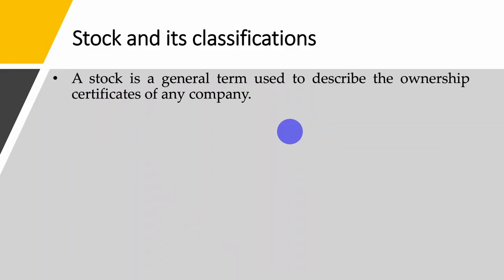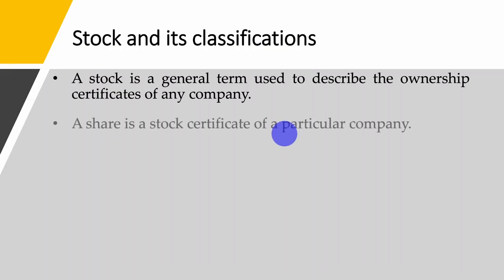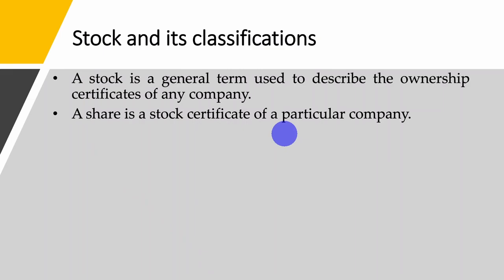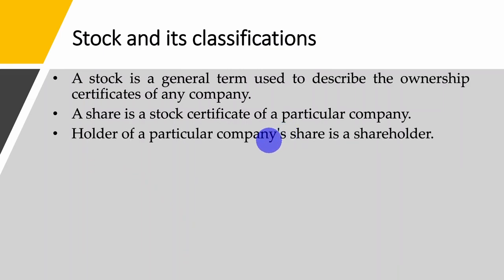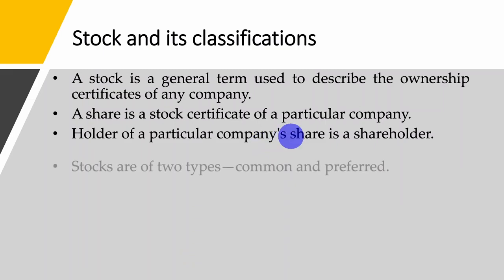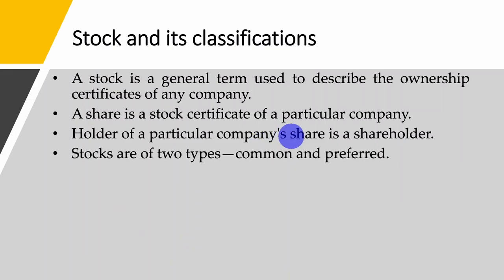A stock is a general term used to describe the ownership certificate of any company, while a share is a stock certificate of a particular company. A holder of a particular company's shares is normally called a shareholder. We have two types of stock or shares: common stock or ordinary shares, and preference shares or preferred stock.